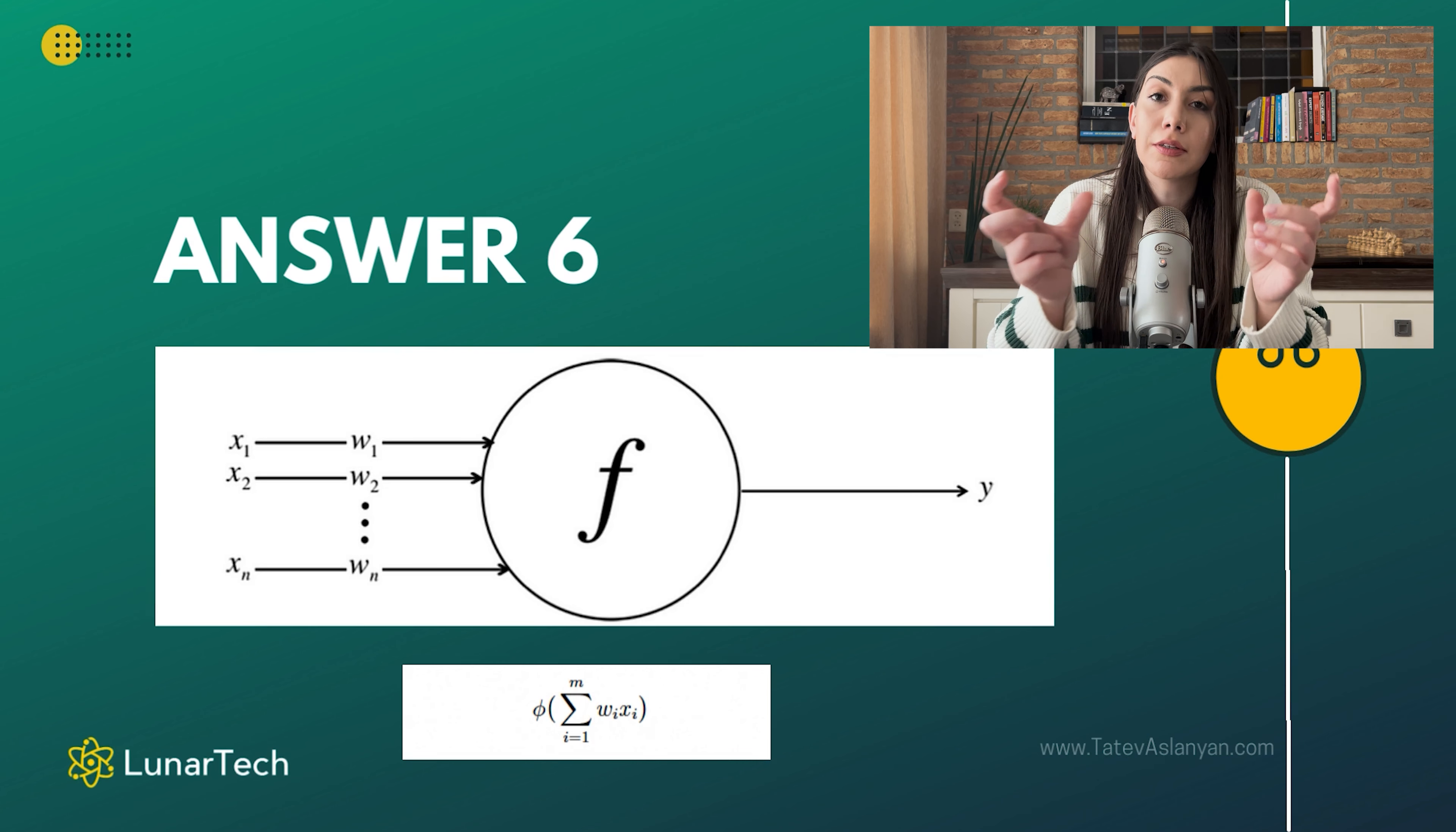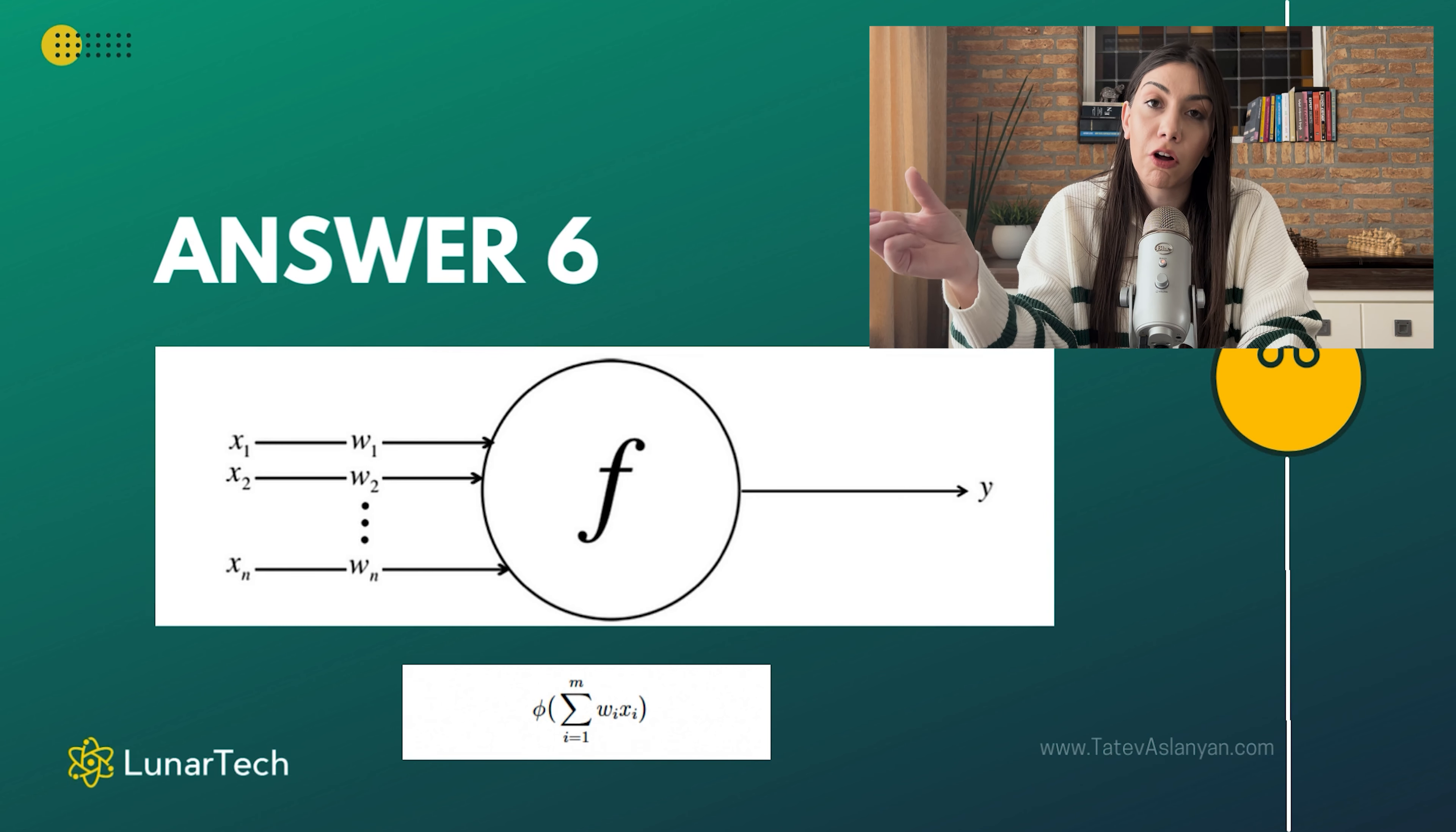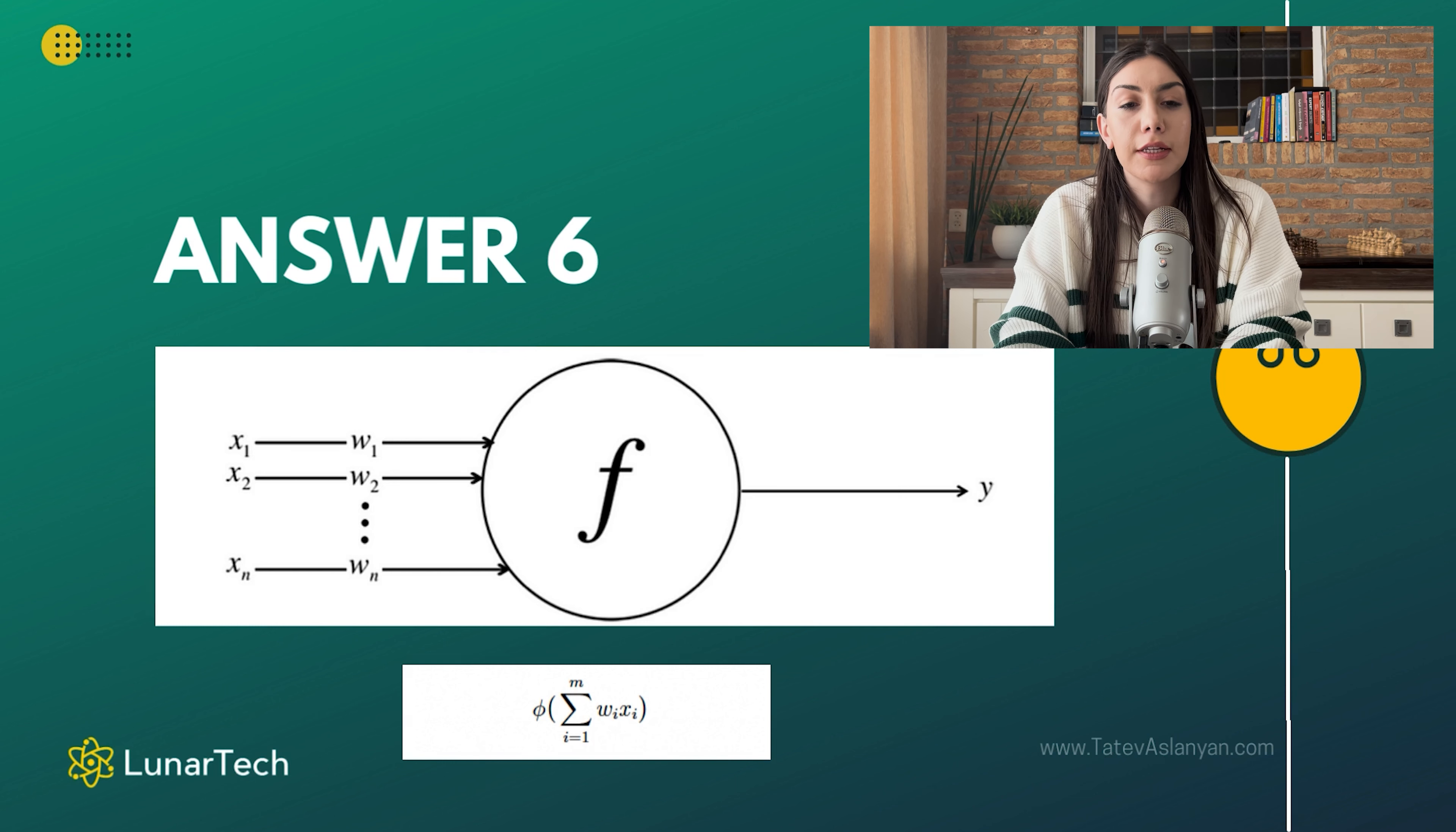Which help us to introduce non-linearity into our neural network. They are like aggregation functions that help us to understand how we need to combine these different inputs, these different neurons' corresponding z-scores, in order to obtain a single activation value.